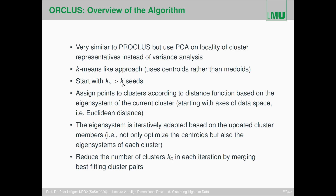ORCLUS starts with more than k seeds and assigns points to clusters according to a distance function based on the eigensystem of the current clusters. In the first iteration, we have no eigensystems, so we start with the axes of the data space using Euclidean distance. Then eigensystems are iteratively updated based on the updated cluster members — we assign cluster members, update the eigensystem, assign cluster members, update the eigensystem, and so on. The eigensystem is now part of the cluster model alongside the centroid, and we alternate between point reassignment and recomputation of the centroid and eigensystem.